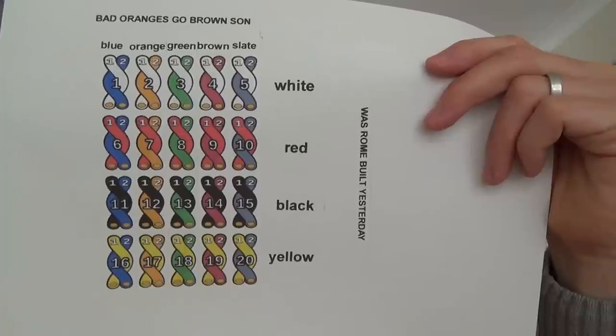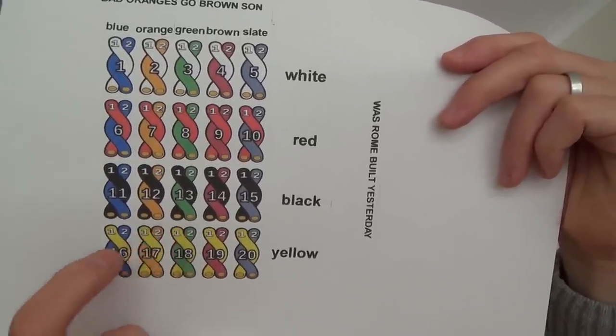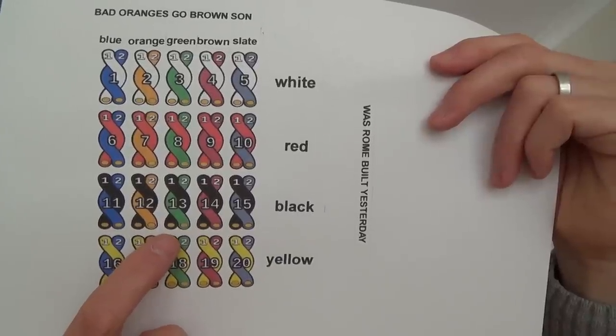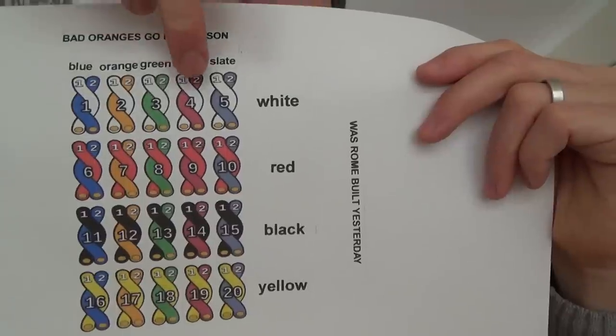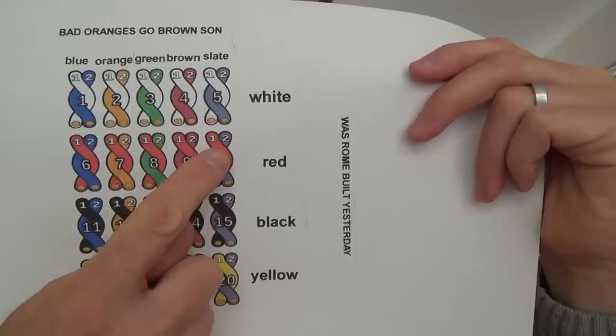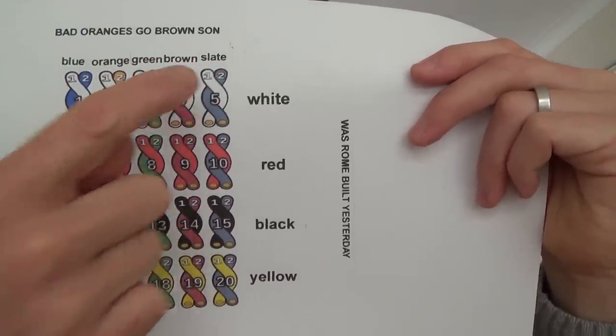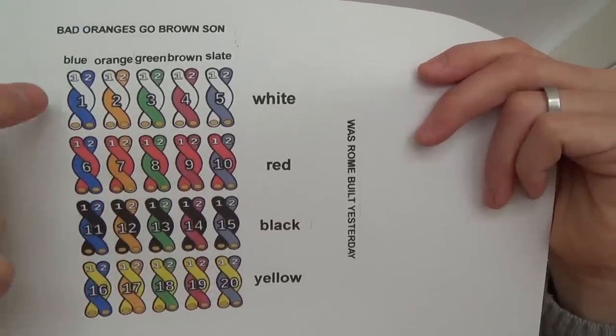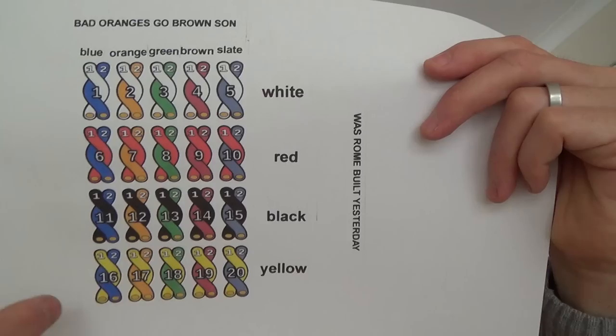So for example, if somebody said to have a look at pair number 18, you would know that it was in the yellow band of cable wires and it's yellow green. So pair 18 would be yellow green. If it was pair four, it would be white brown. If it was pair 10, it would be red blue, and so on. So basically it's always blue, orange, green, brown slate, blue, orange, green, brown slate. And the only difference is the first wire. So this is the whites, the reds, the blacks, and the yellows.